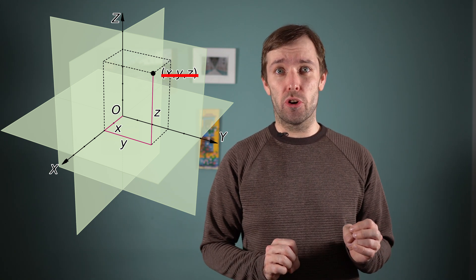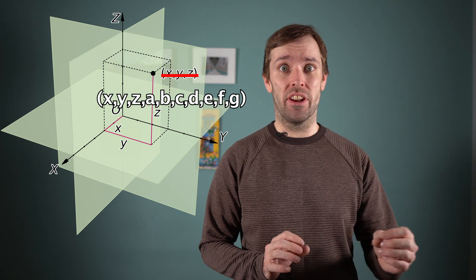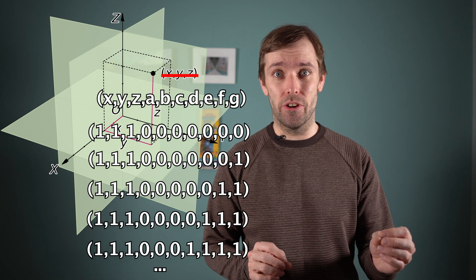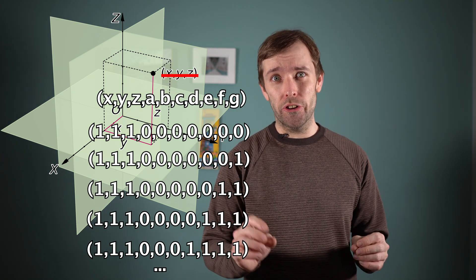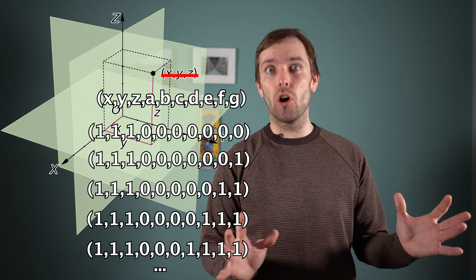Every x, y, z coordinate would also have an a, b, c, d, e, f coordinate, and every combination of those. Of course, we can only see and interact with things where a, b, c, d, e, f are all equal to zero.